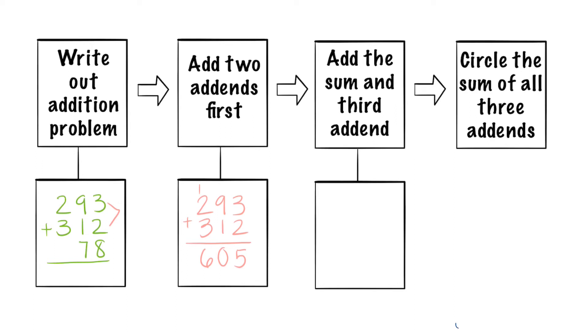Now we have to do step three. We have to add the sum which was 605 and the third addend which is 78. So we're going to write 605 plus 78.